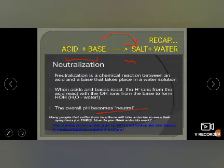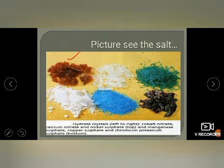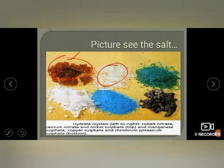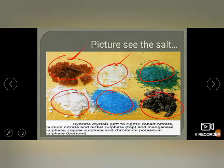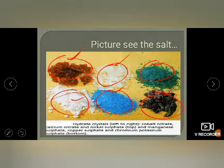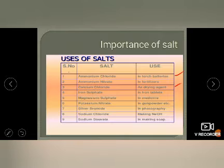These are some pictures of salt. The answer to the previous question: this is hydrated crystal of cobalt nitrate. This is calcium nitrate, this is nickel sulfate, this is manganese sulfate, this is copper sulfate, and this is potassium chromium sulfate. All these salts are available in our lab and are made up of one acid and one basic radical. In future classes, you will do a practical to determine the acidic and basic radical in a given salt.